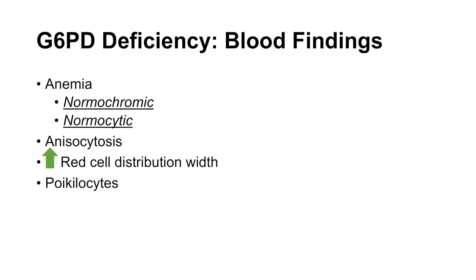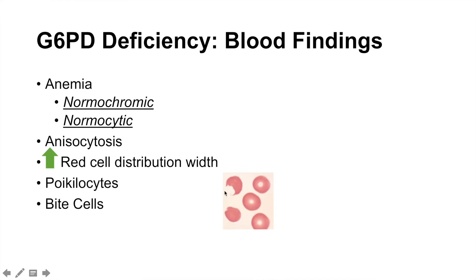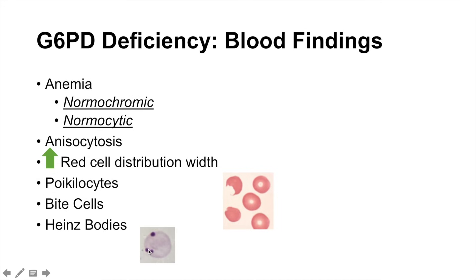There are what we call poikilocytes, meaning cells of different shapes. In some cases, we see what are called bite cells — these have almost a little chunk out of them, as if they've been bitten into. We sometimes see these in glucose-6-phosphate dehydrogenase deficiency. There are also Heinz bodies, which are little accumulations of protein — specifically small packages of hemoglobin — also seen in this deficiency.